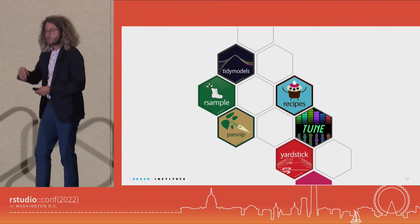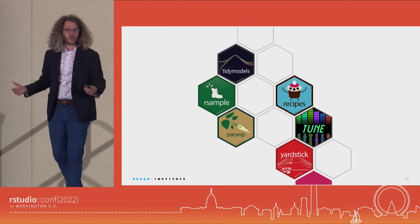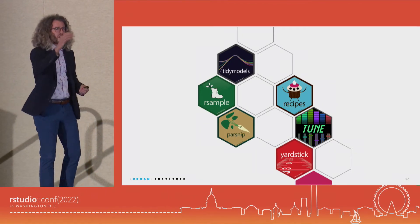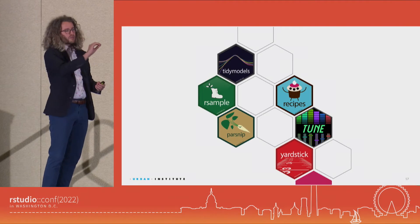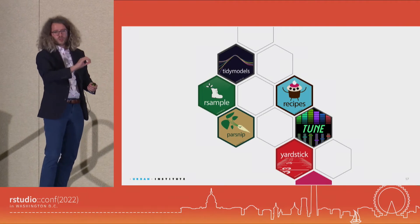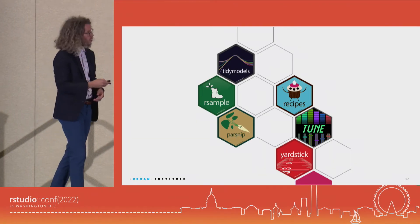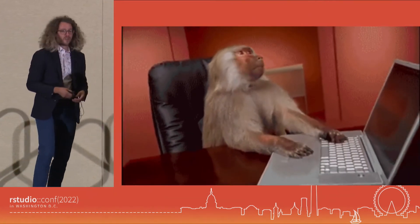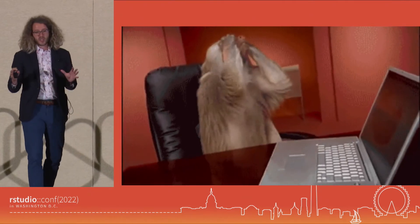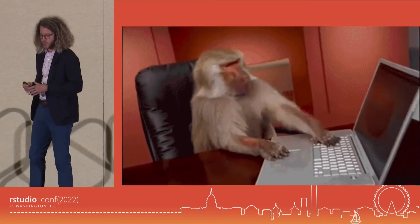In the example we're working on we need to do three predictive models, but I gave you another example where we need to do more than 200 predictive models. We could imagine having an R script where it's model one predict, model two predict, model three predict. But if you're going to go all the way to 200 variables, that's going to become a real pain really quickly.